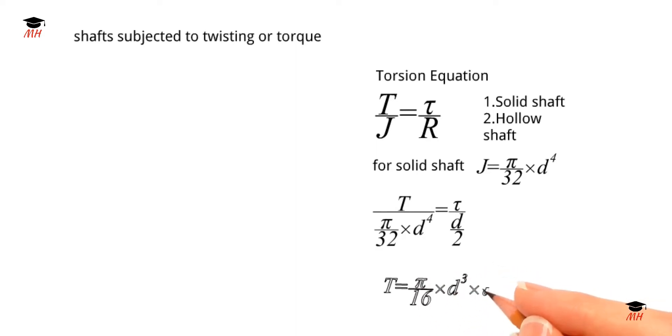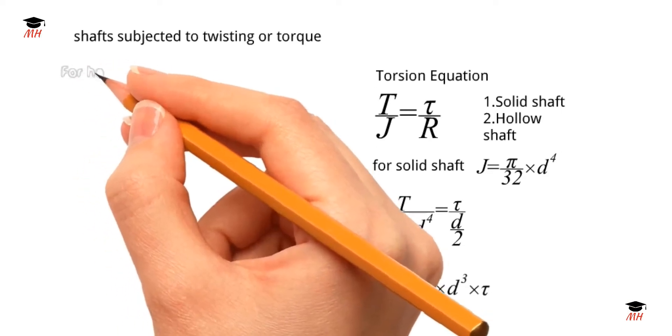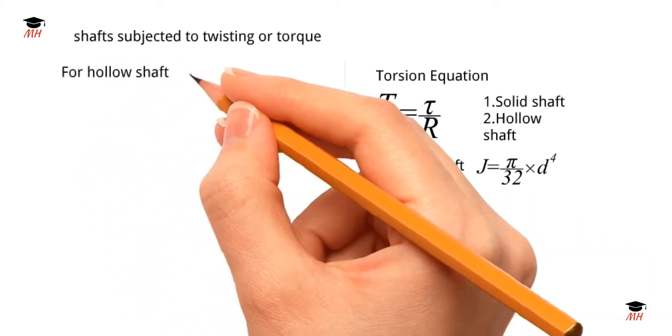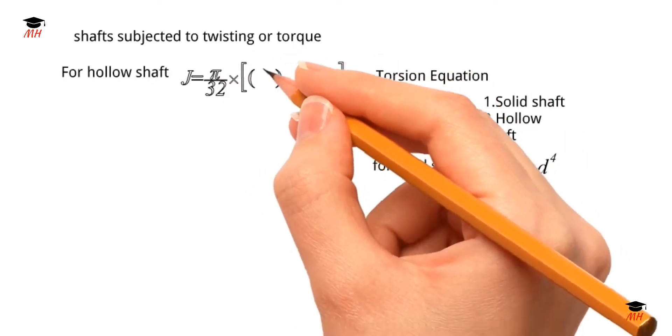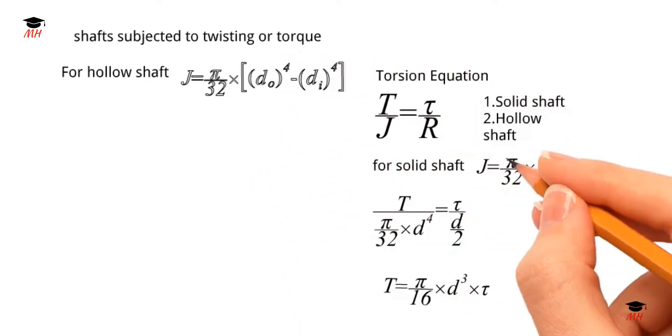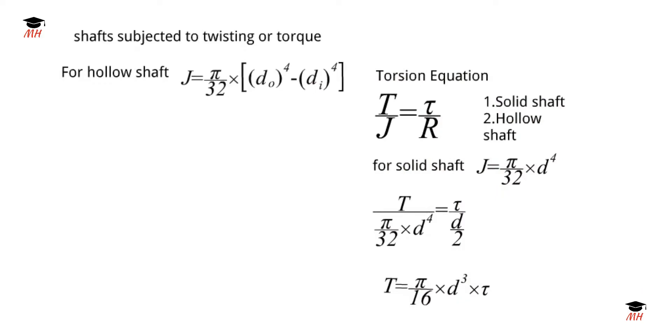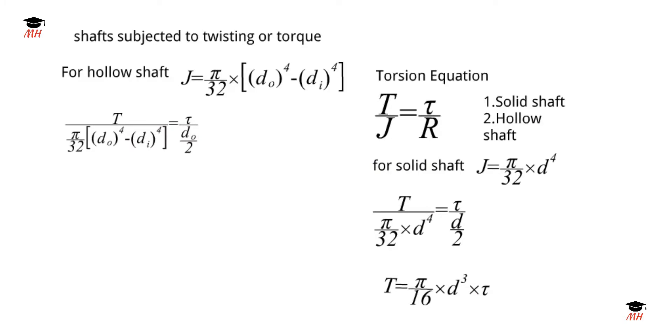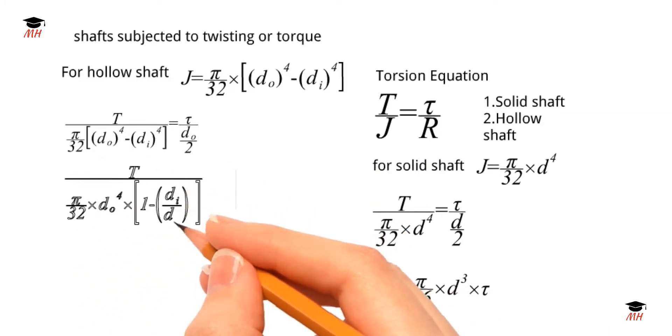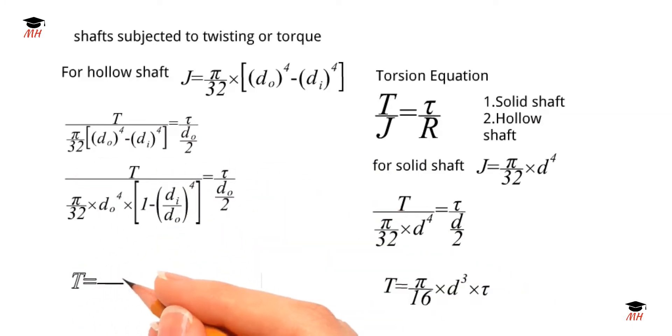Now for hollow shaft, the polar moment of inertia is J = π/32 × (do⁴ - di⁴). We substitute this value in the torsion equation. In the next step, we take do⁴ as common. By canceling and arranging the terms...